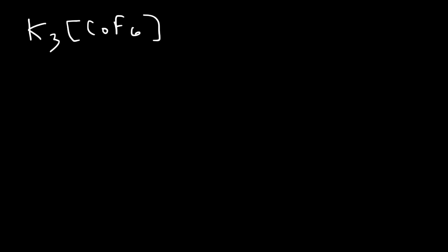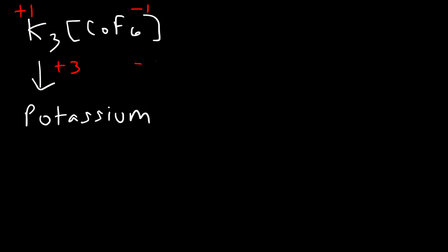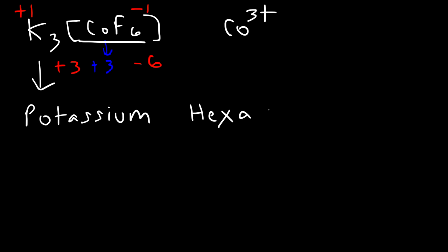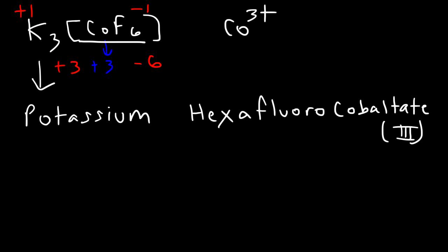For K3CoF6, the second part is again the complex ion. K is potassium. Potassium has a plus one charge, fluorine has a minus one charge. One times three is three, negative one times six is negative six. Cobalt must have a plus three charge so these three numbers add up to zero. To name the complex ion: six ligands is hexa, the ligand fluorine is called fluoro, and the Latin name for cobalt is cobaltate. Oxidation state three. The full name is potassium hexafluorocobaltate(III).